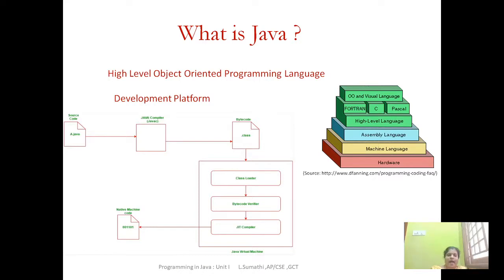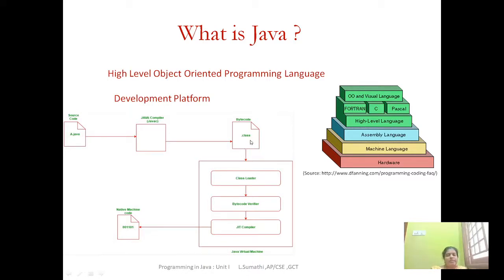For any programming language you need an editor for writing your program. Then you need to give the program as input to a compiler or translator that will convert it into machine-readable form for execution. In Java, you write your source program and save it with the .java extension. Then you use the compiler javac, which takes your Java program and translates it into a class file with extension .class. This class file is called bytecode.